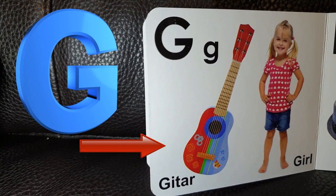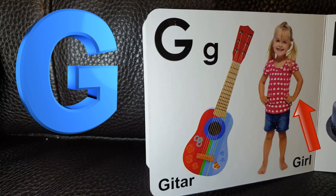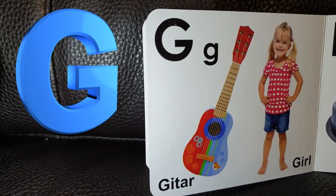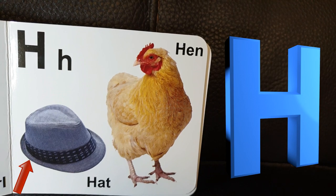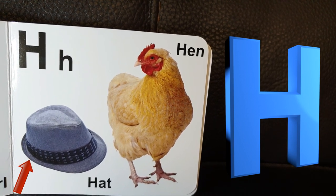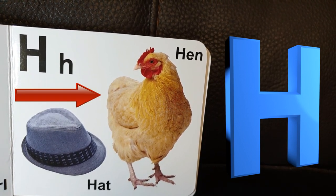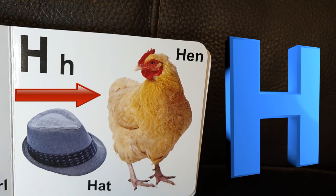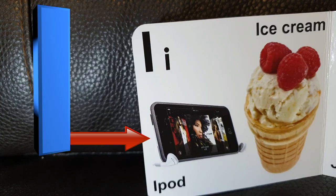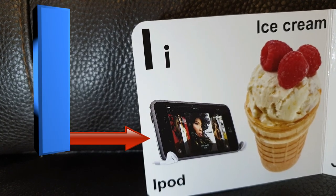g-g-g-guitar. G is for girl, g-g-g-girl. H is for hat, h-h-h-hat. H is for hen, h-h-h-hen. I is for iPod,